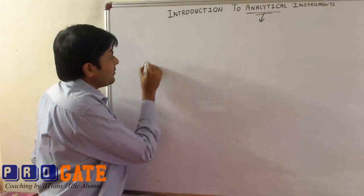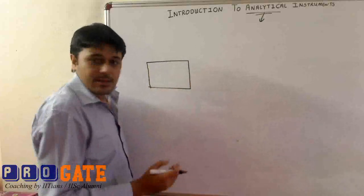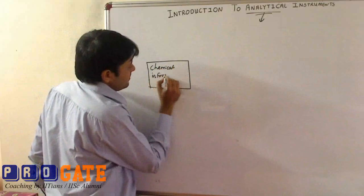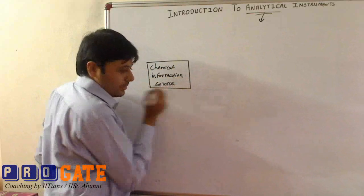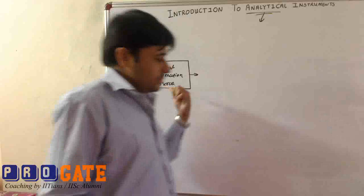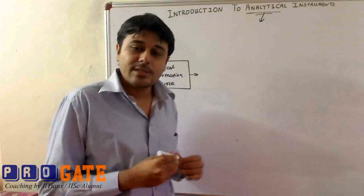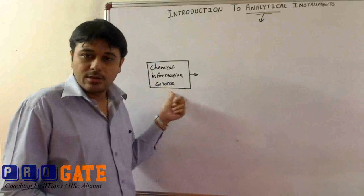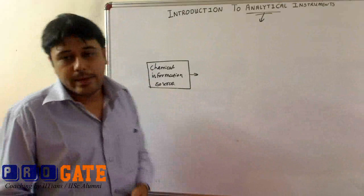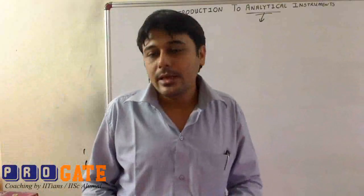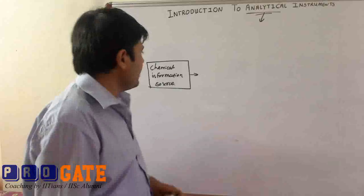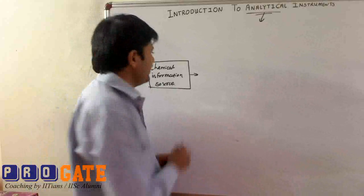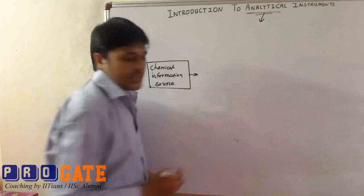All analytical instruments generally follow this basic block diagram. The first block will have a chemical information source. This chemical information source basically gives a signal proportional to the chemical component. For example, in mass spectrometry, a radiation source — or even a substance itself — can be a source of the signal. For example, iodine at a particular temperature emits yellow light, so that yellow light can act as a source which can be detected to give us information that iodine is present.